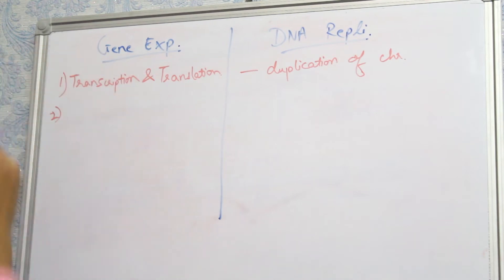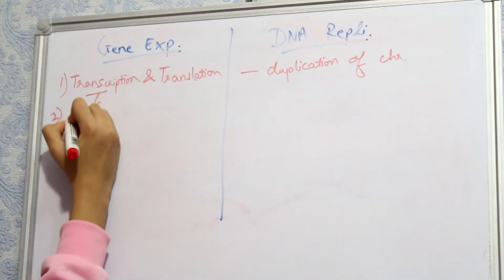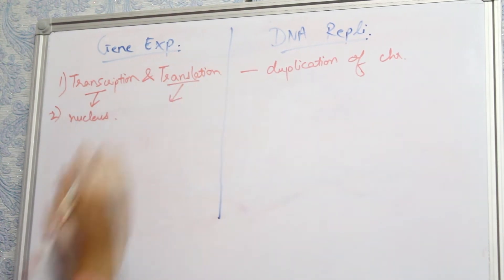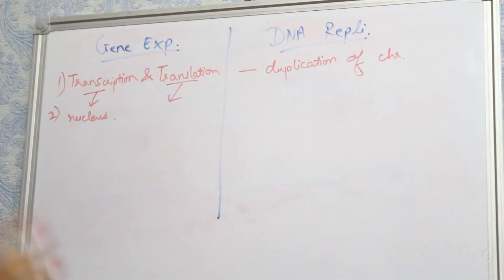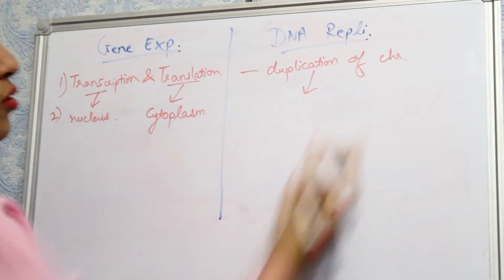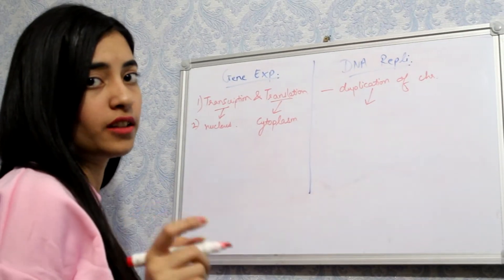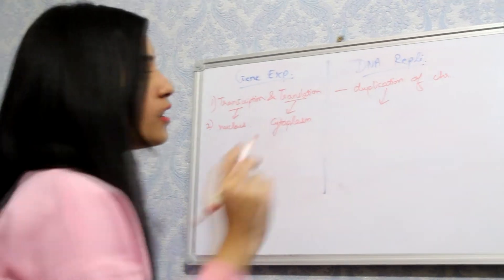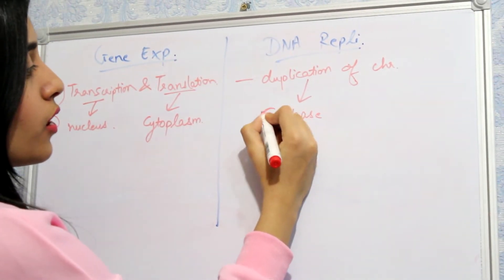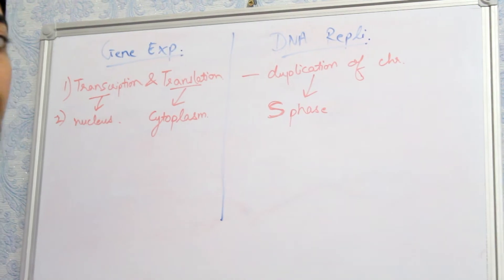Transcription occurs in the nucleus, and translation — that is the conversion of RNA to protein — occurs in the cytoplasm. Duplication of chromosomes occurs in the S phase of the cell cycle, that is the interphase S phase. It is very important to remember that chromosome duplication occurs in the S phase.